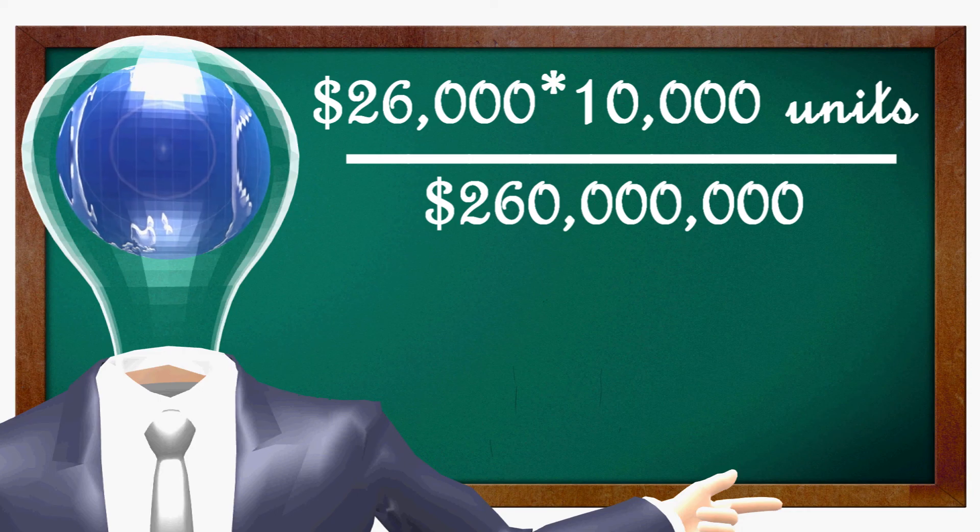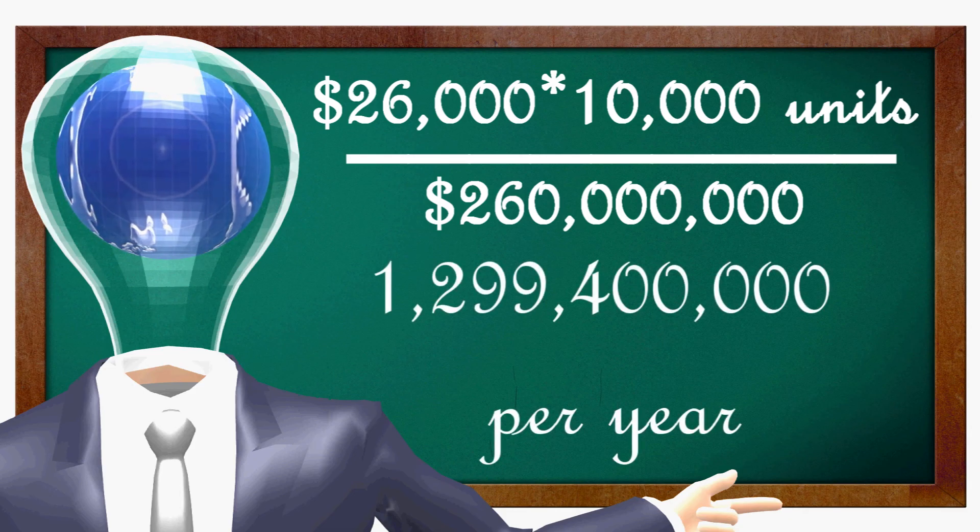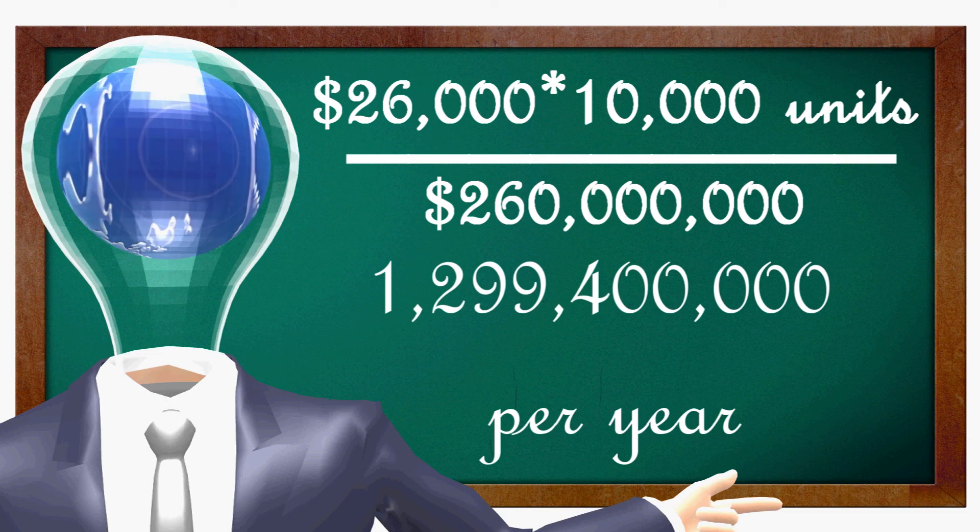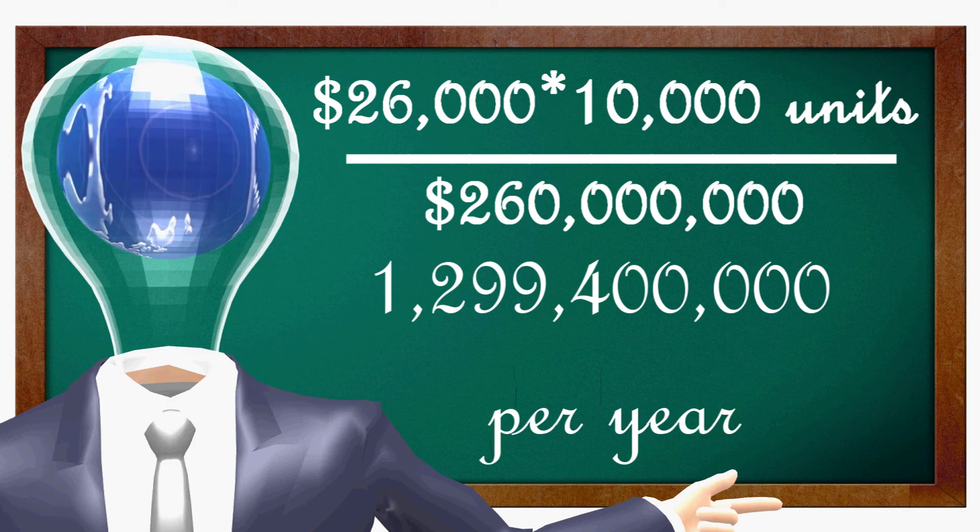The formula for the cost of programmed units versus the total savings of this one program nationally is $1.2994E+09 minus $2.6E+08 equals $1.0394E+09. In layman's terms, this would be a net profit of over $1 billion nationally per year.